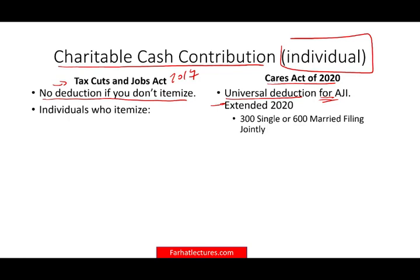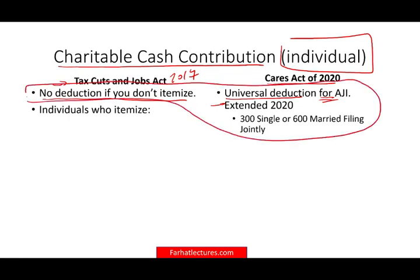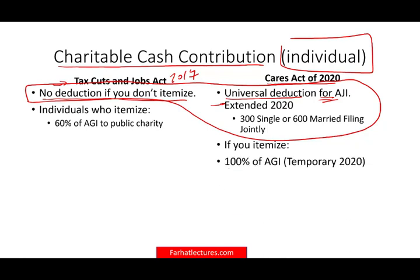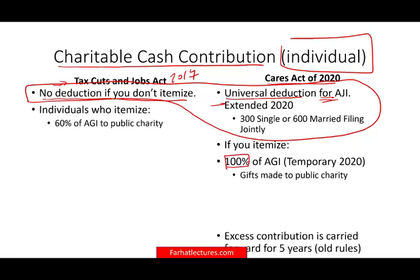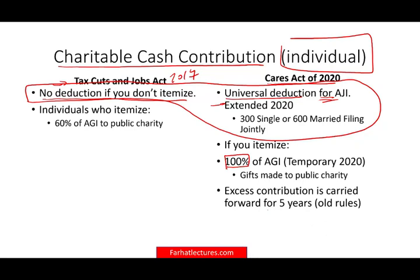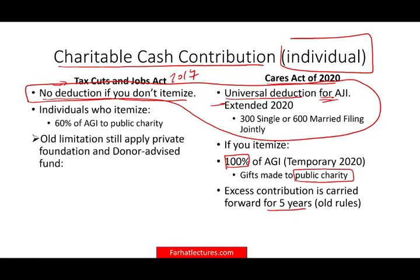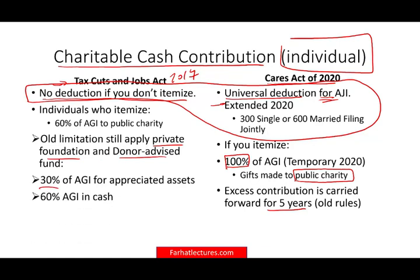For individuals who itemize, under the old rule, you could take 60% of your AGI for any cash contribution. Under the CARES Act for 2020, if you itemize, you can take up to 100% of your adjusted gross income. If you contribute more, any excess can be carried forward for five years. Remember, the contribution has to be made to a public charity. The old limitations still apply to private foundations and donor-advised funds, where you're limited to 30% of AGI for appreciated assets and 60% for cash.